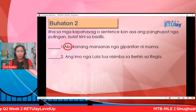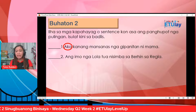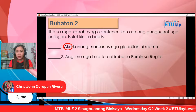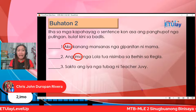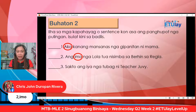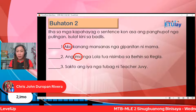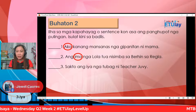Ilaha sa mga kapahayag o sentence, kunasa ang panghupot nga pulingan. Isulat kinis sa badlis. Ingon si Jewel: imo. Ingon si Christian: imo. Kanindot. Tanawon na to — kung sakto ba ang inyong mga tubag: hindihan mo, imo. Sakto ang iya nga tubag ni Teacher Jovi. Sige padayon kita mga bata. Kapaspas ni ining mga tinunan. Ayaw kalimot tangan o numero — write a number so that we can really check kung sakto ang inyong mga tubag.